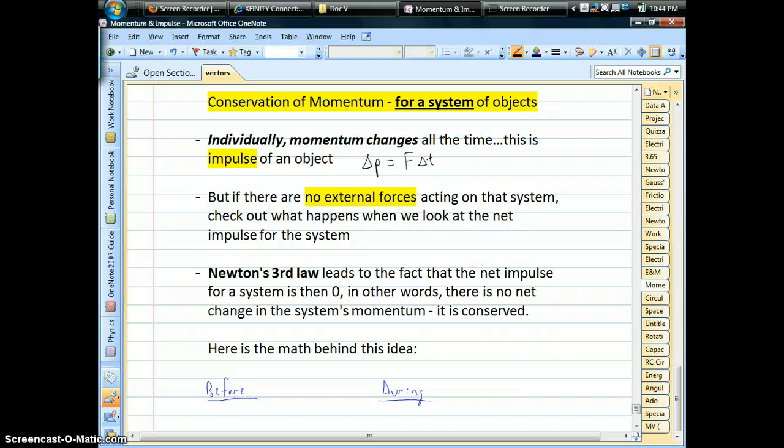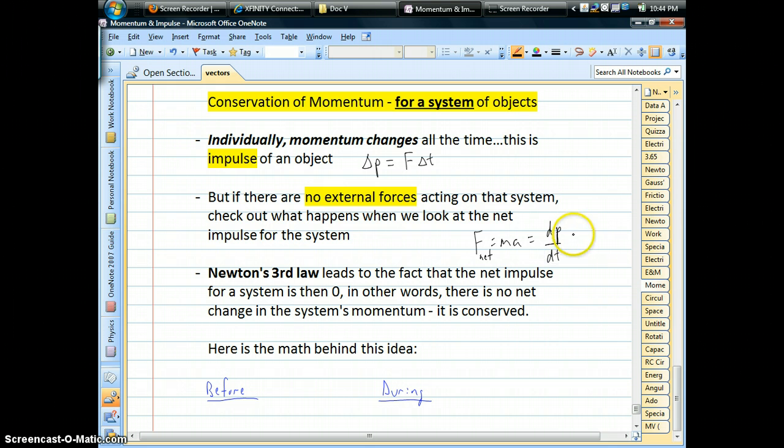Now, in order for conservation of momentum to work, we have to have no external forces. So if you recall Newton's second law, F equals ma, and we'll just write that as your net force, we can rewrite that, knowing that acceleration is dv dt, the rate of change of velocity, we've rewritten this as dp over dt. So impulse is your numerator there. That's your change of momentum divided by time. So basically, if your net force acting on the system turns out to be zero, we have a derivative being equal to zero.